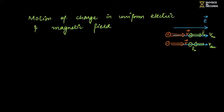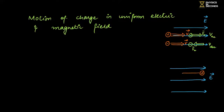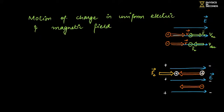Remember this point. Another example: if a positive charge moves against the electric field, the positive plate repels it — the electric force is opposite to velocity, so velocity decreases (negative acceleration, deceleration). But if a negative charge moves against the electric field (towards positive plate), the positive plate attracts it — force is along the velocity, so velocity increases.